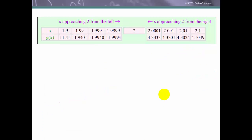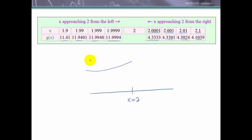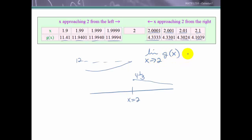Let's look at another example. Here we have g(x), and we're not given the function defined explicitly — we've got a table of values. We can see as we approach 2 from the left-hand side that our function appears to be approaching 12. But as we take values from the right-hand side, values greater than 2 approaching 2, our function appears to be approaching 4 and 1 third. Therefore, the limit as x approaches 2 of this function does not exist — abbreviated DNE — because the left-hand limit does not equal the right-hand limit.